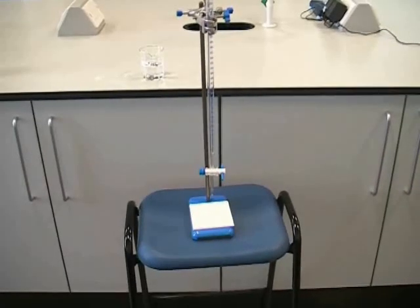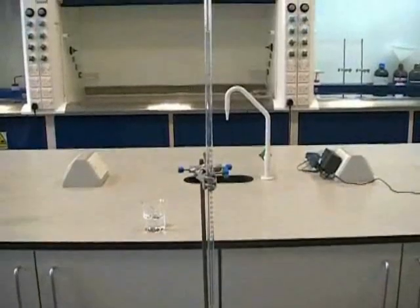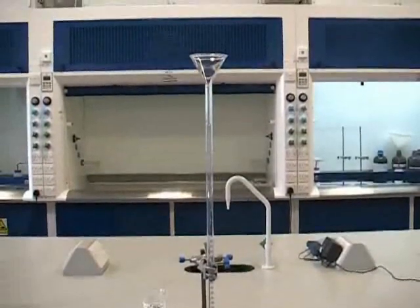One safe way of filling a burette is to clamp it and place the clamp stand on top of a stool. This allows you to look at the burette at eye level. You will be given guidance on what's expected of you at this point.